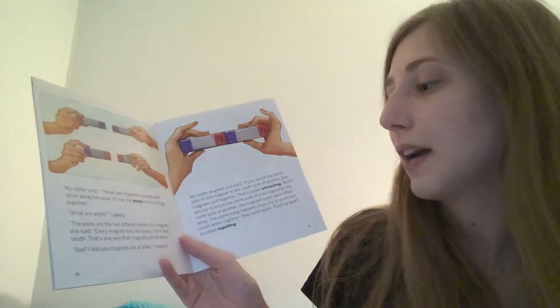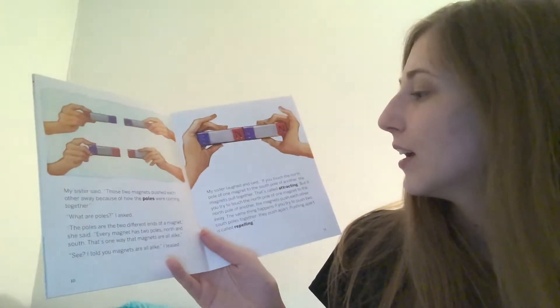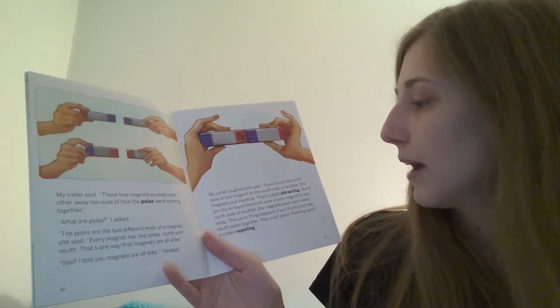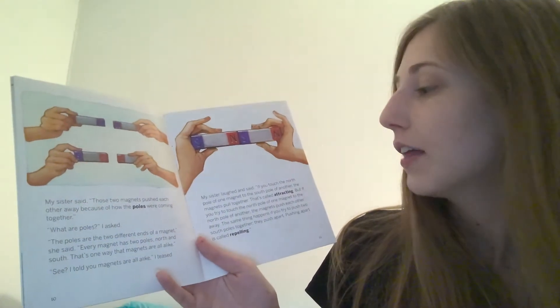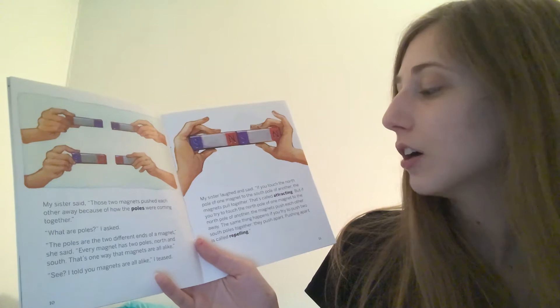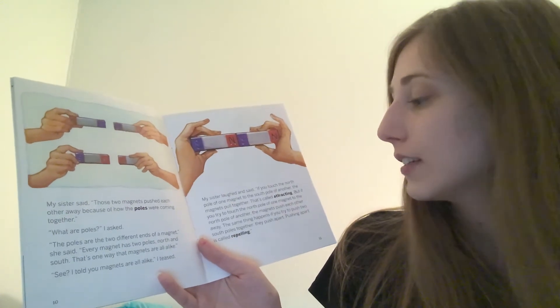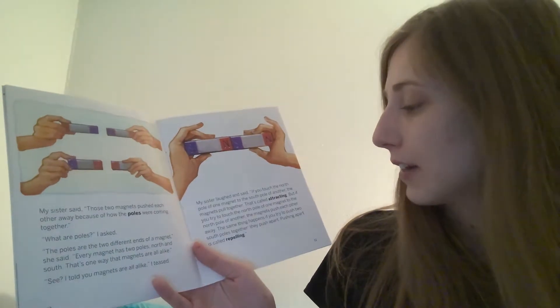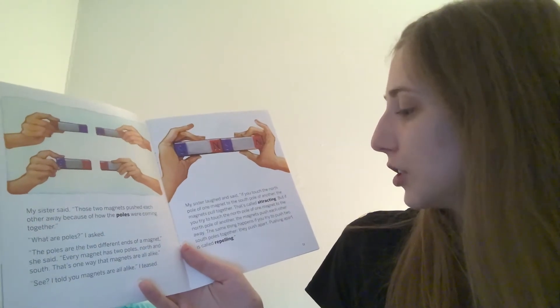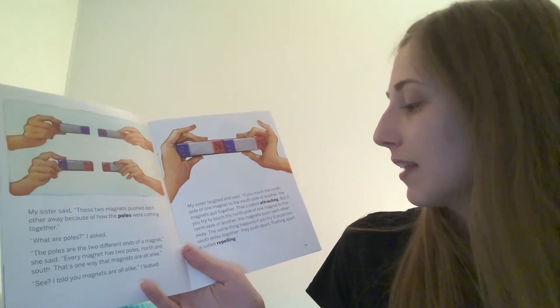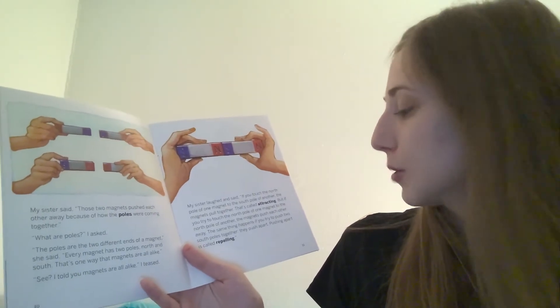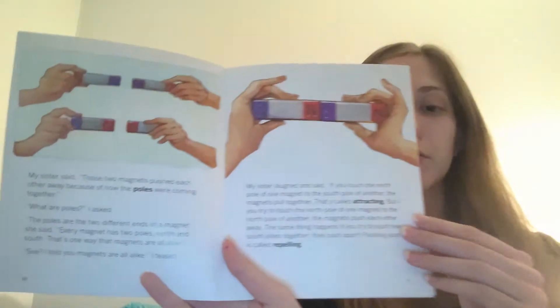See, I told you magnets are all alike, I teased. My sister laughed and said, If you touch the north pole of one magnet to the south pole of another, the magnets pull together. That's called attracting. But if you try to touch the north pole of one magnet to the north pole of another magnet, the magnets push each other away. The same thing happens if you try to push two south poles together. They push apart. Pushing apart is called repelling.